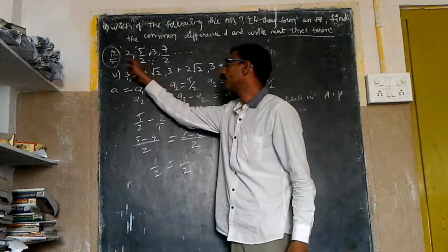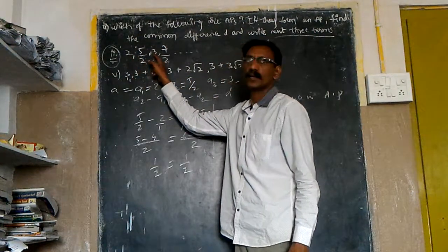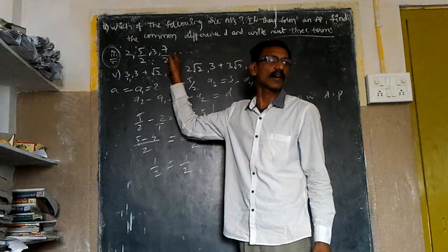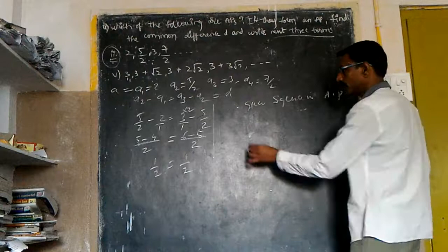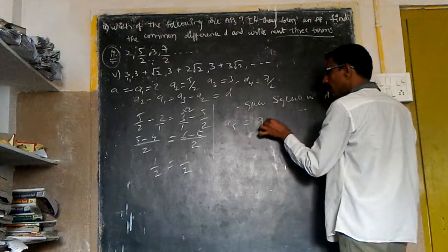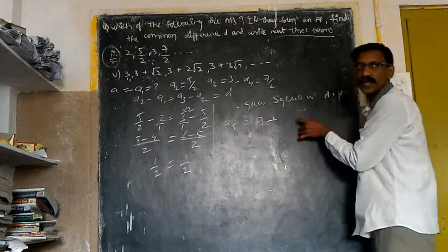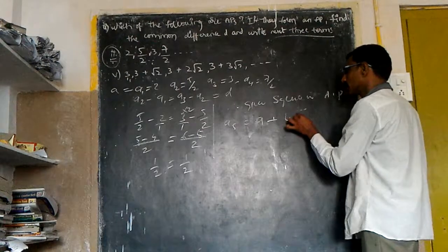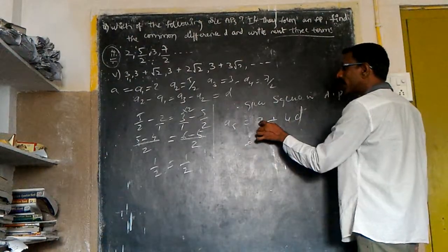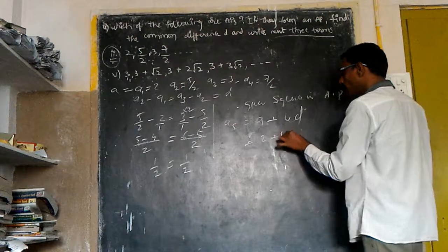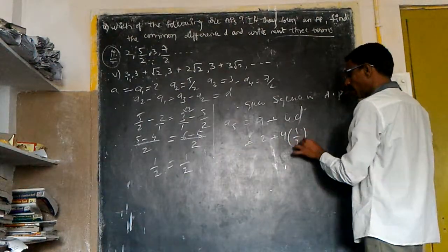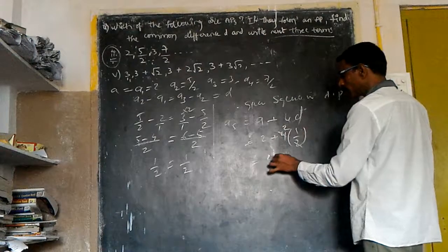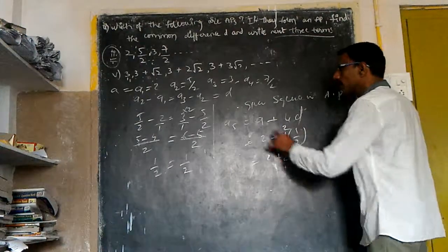A5 equals A plus how many D's will appear? Four. Four D's. What is my A? 2. Write down 4 into what is my D? 1/2. How many times will it go? 2 times. 2 plus 2, how much? 4. Similarly, A6.